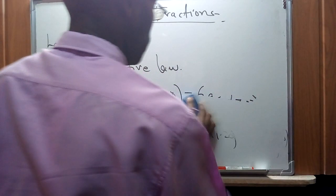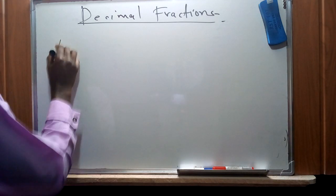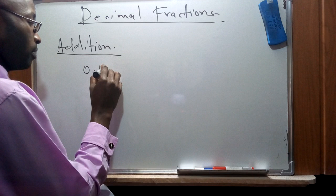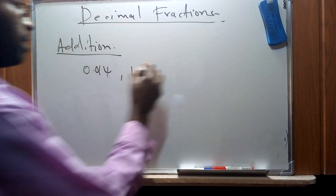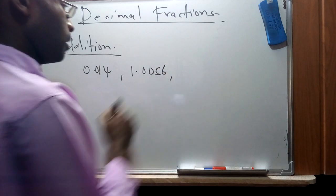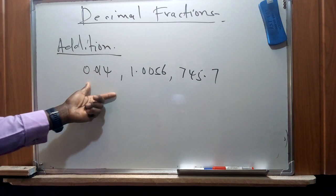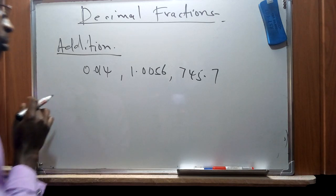Now we'll see how to perform addition or subtraction of decimal fractions. For addition, we write the numbers so that the decimal points are aligned vertically. For instance, with numbers like 0.014, 1.0056, and 745.7 — which have different decimal places — we write them such that the decimal points coincide, then add in the same order as with normal integers.